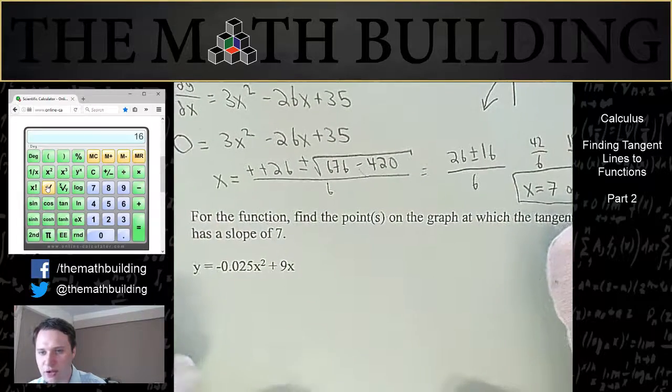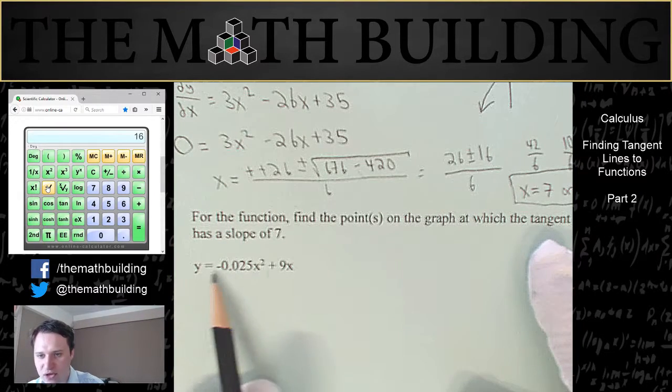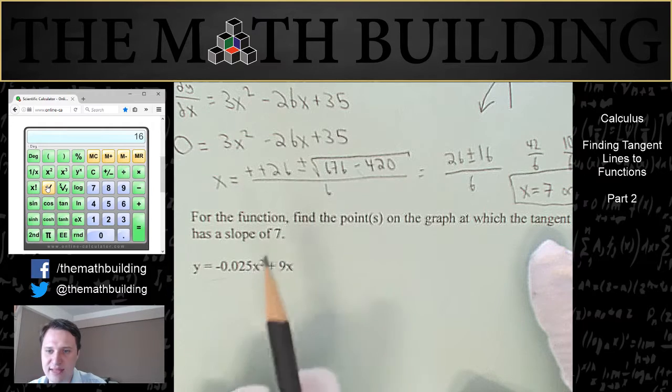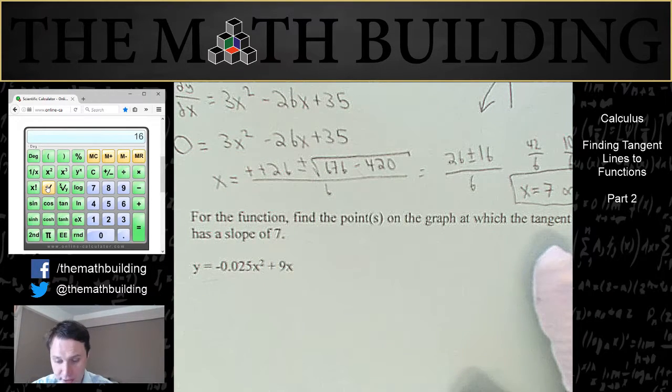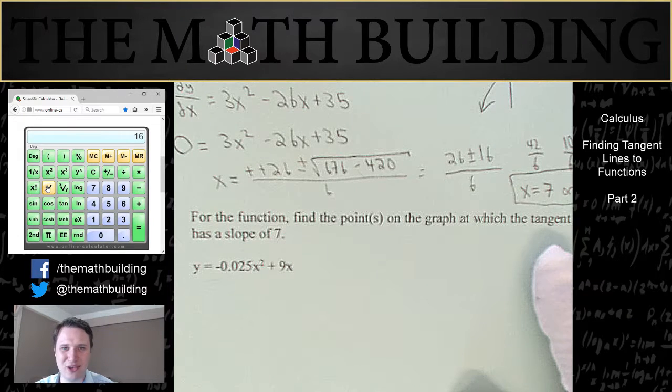In fact, why don't you try to do this next one on your own. We've got what looks like to be a quadratic equation right here. And we want to find out where is that graph going to have a slope of 7. So why don't you try to pause the video here and see if you can get it.